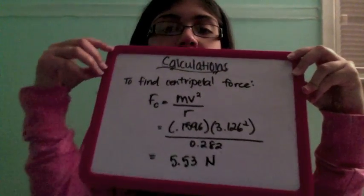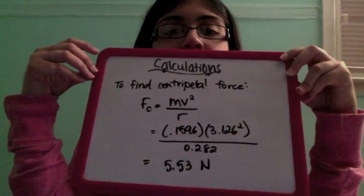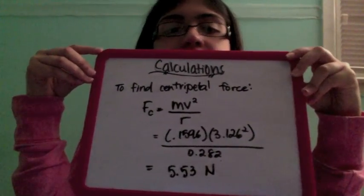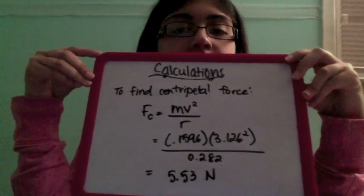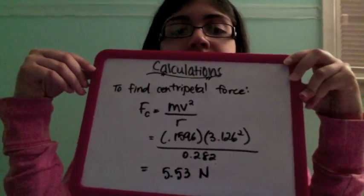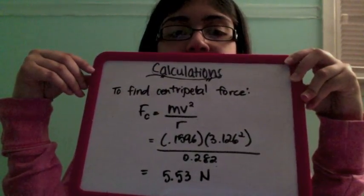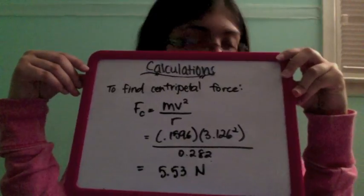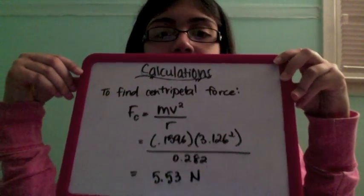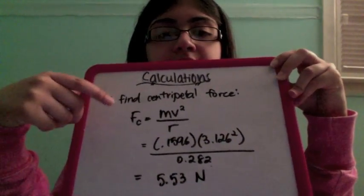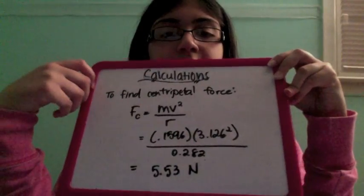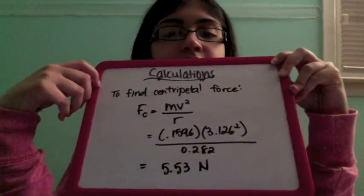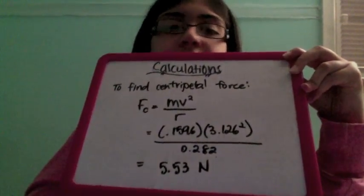To find centripetal force, we used the formula mass times velocity squared divided by radius. We found the mass of the pig to be 0.1596 kilograms. After we plugged in the rest of the numbers, we found that the centripetal force is 5.53 newtons.